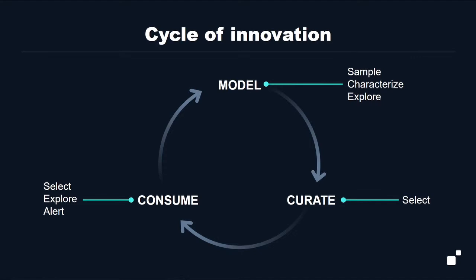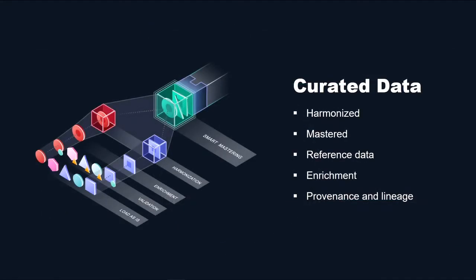Let's double-click on what's actually happening inside the MarkLogic Data Hub. The MarkLogic Data Hub is about making curated data — data that's been harmonized, so data of different shapes brought into a common shape, or brought into a better shape. It's data that's been mastered: bringing partial records together, eliminating duplicates, or both. You're dealing with reference data, various kinds of enrichments, and keeping provenance and lineage as you go.